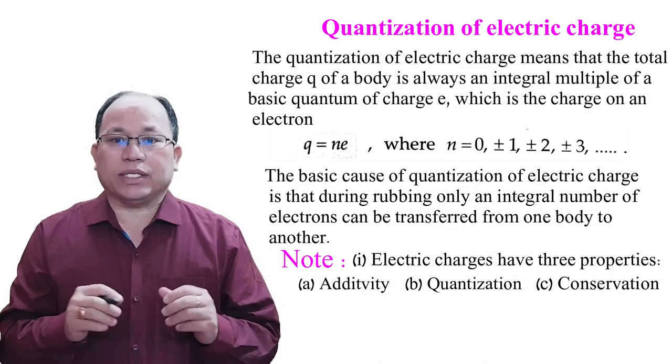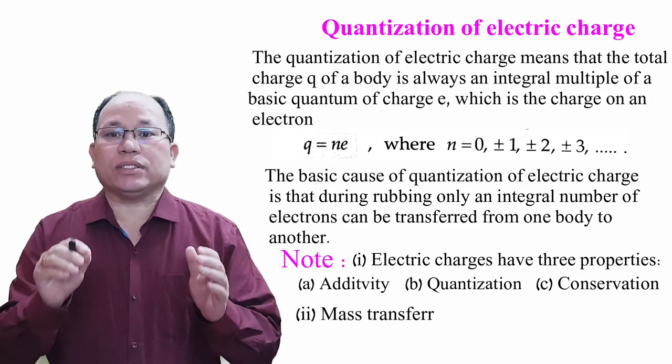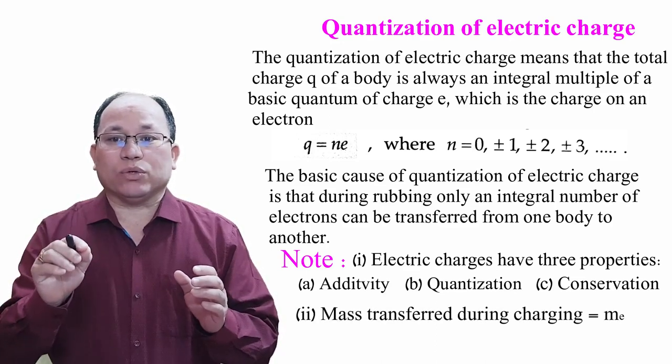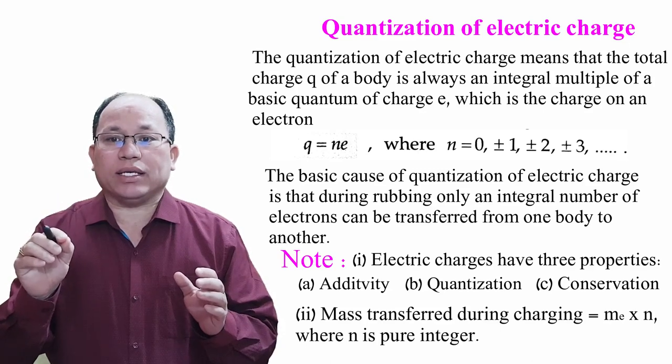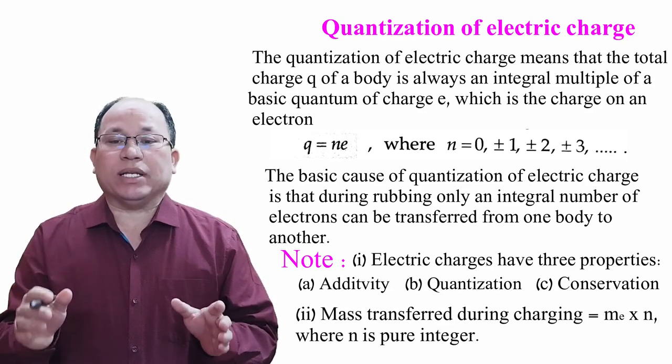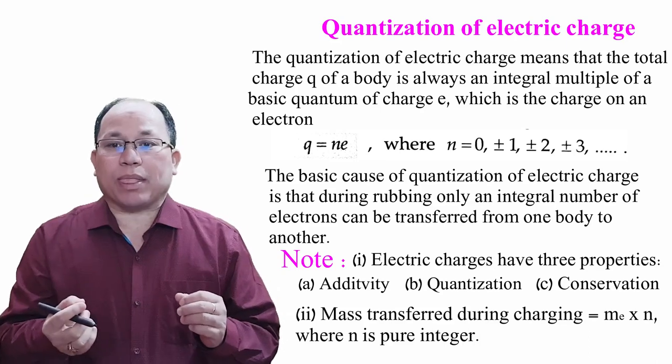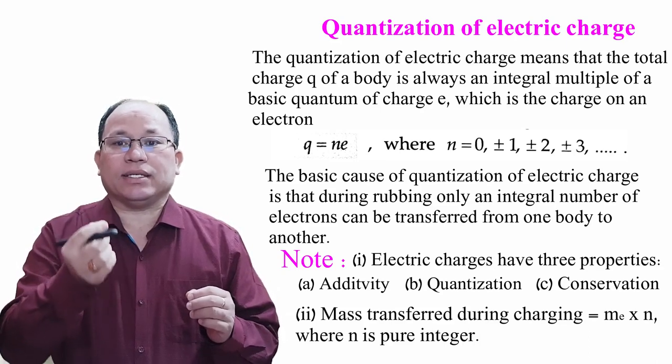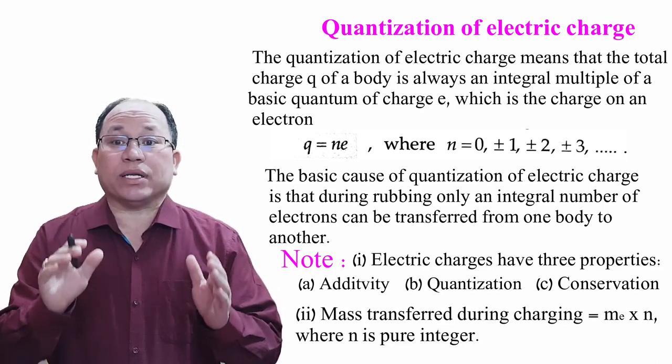The next point is mass transferred during charging is equal to me × n, where n is a pure integer. This means charges have mass. Electron has mass, that is 9.1 × 10^-31 kg.